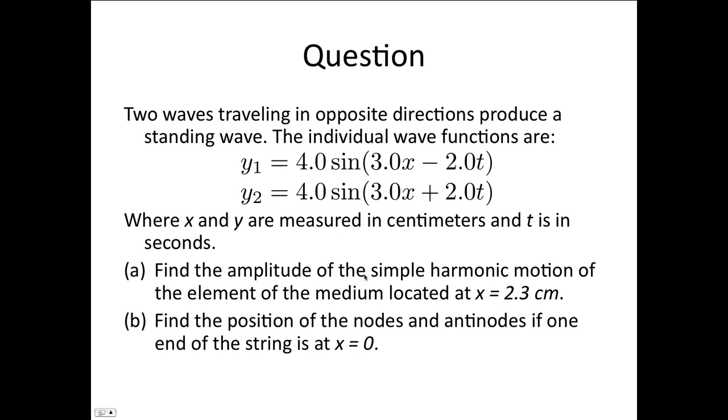Part (a) asked us to find the amplitude of the simple harmonic motion of the element of the medium located at x = 2.3 cm. And part (b) says find the position of the nodes and antinodes if one end of the string is at x = 0.